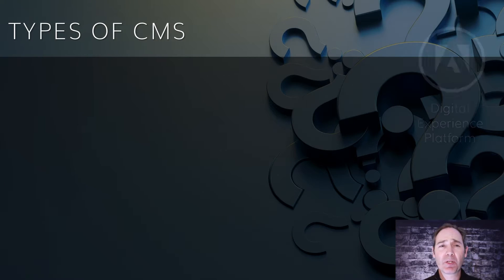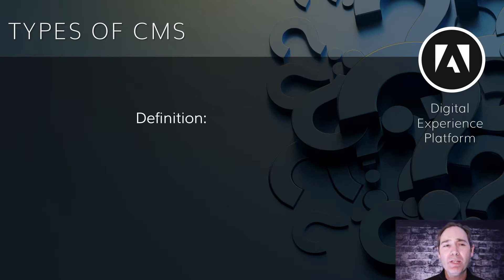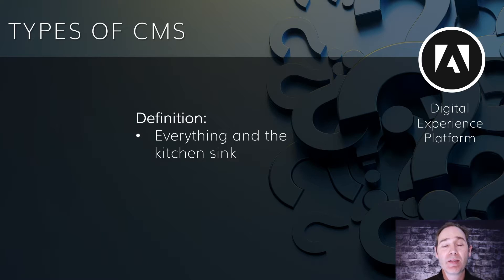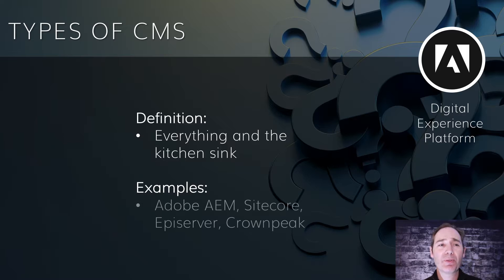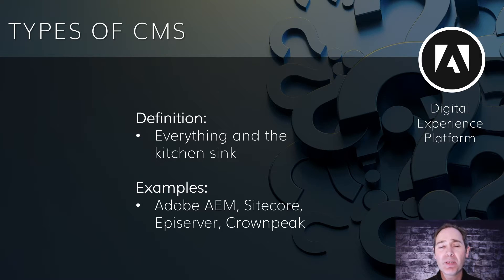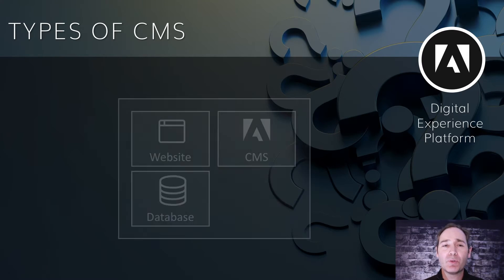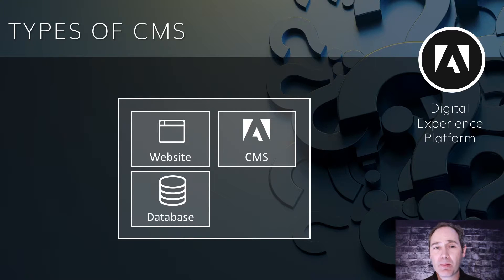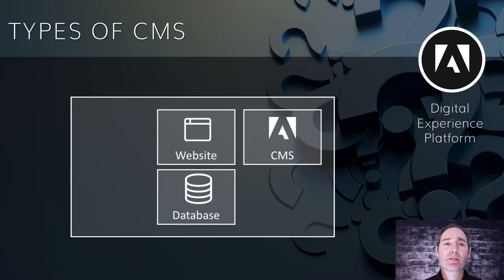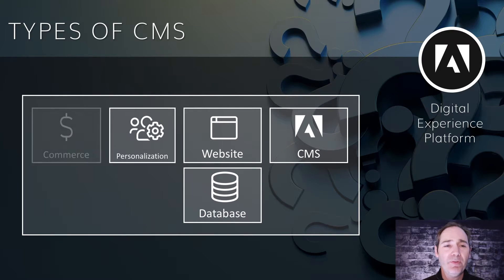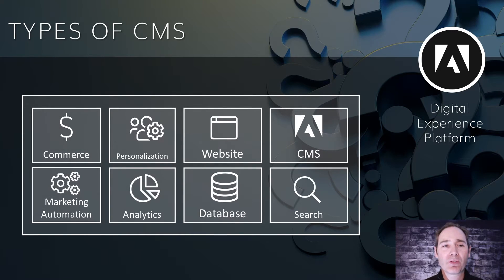Now let's look at Digital Experience Platforms. I would define these as everything including the kitchen sink — lots of features in these platforms. Some examples are Adobe AEM, Sitecore, EpiServer, and CrownPeak, among others in this space. If traditional CMS says let's put everything in the same box, DXP says let's put more stuff in the box. There's a simplified representation of just a few of the features these platforms might have — it's a lot of stuff.